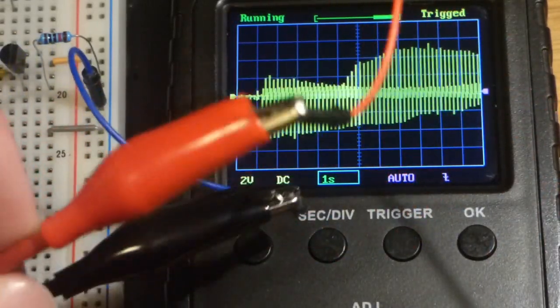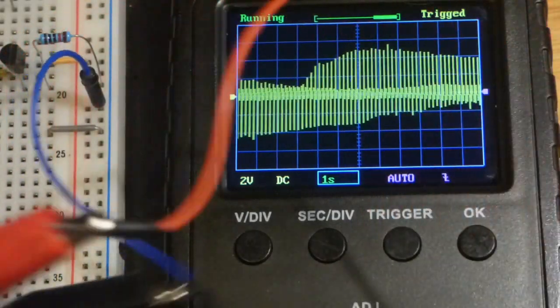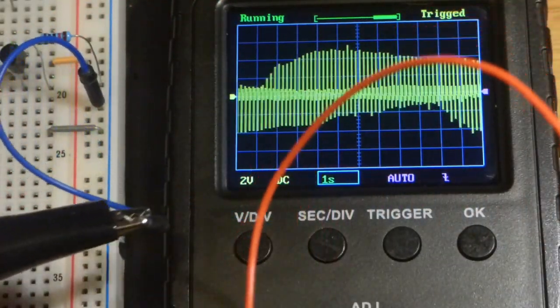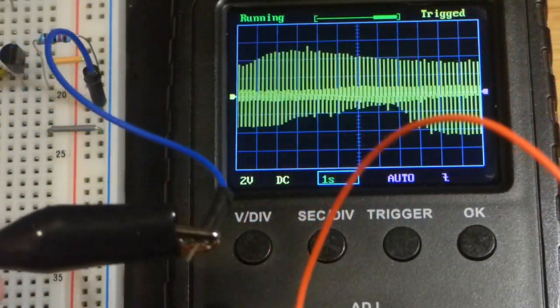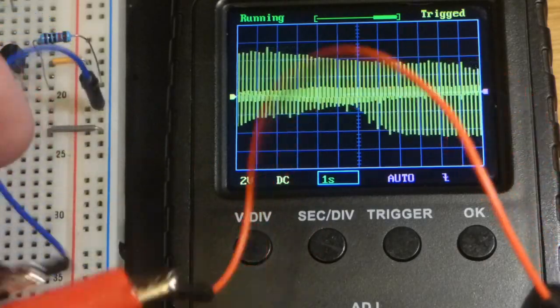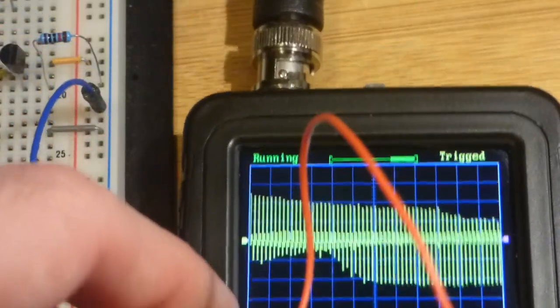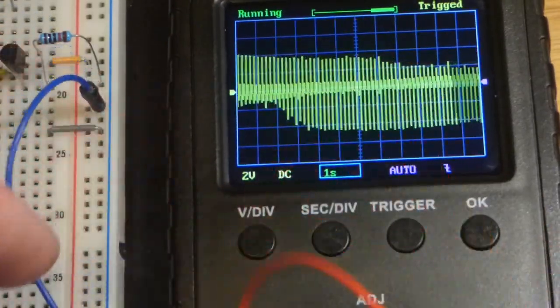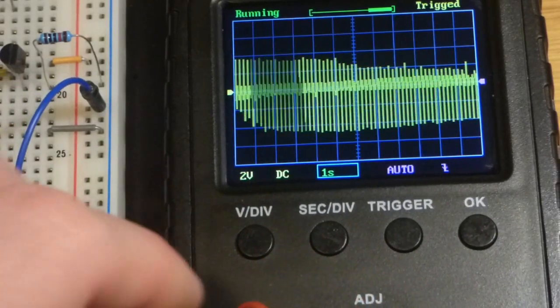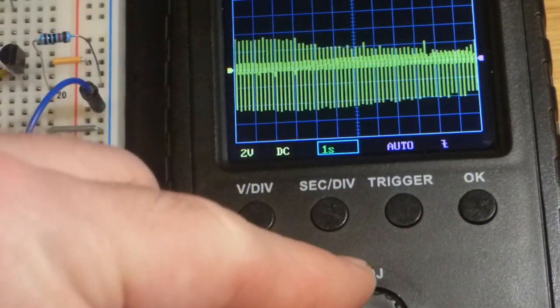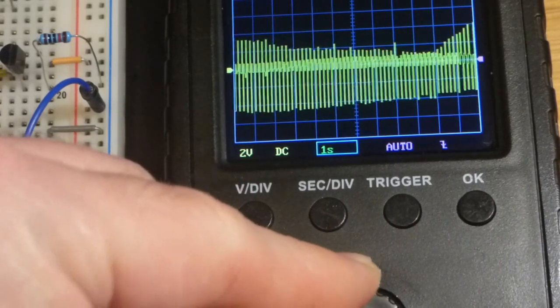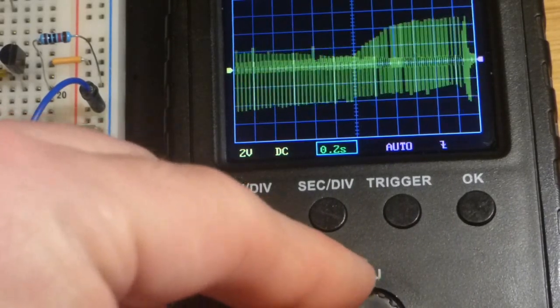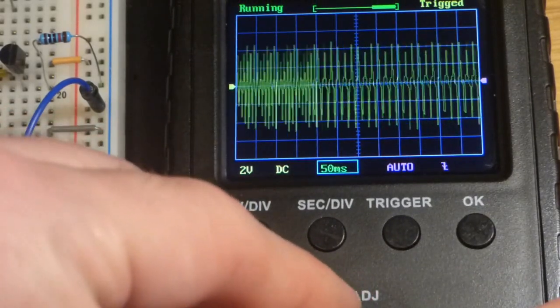So we got the red alligator clip clipped to a jumper that I'm touching, and the black clip is going to the negative barrel. There you can see we have the cable up there. And so to make this look better, let's actually speed up the scroll.